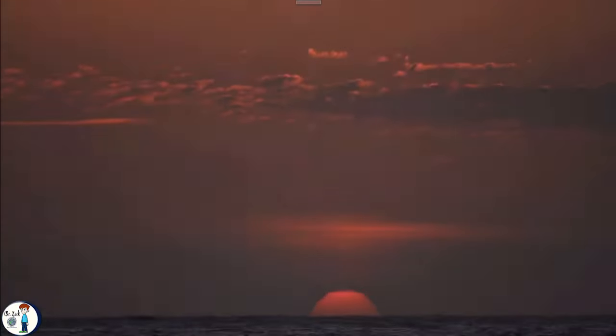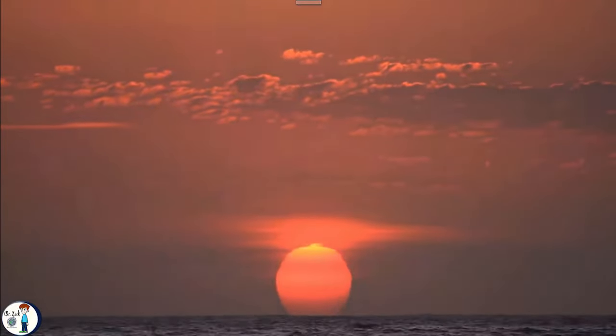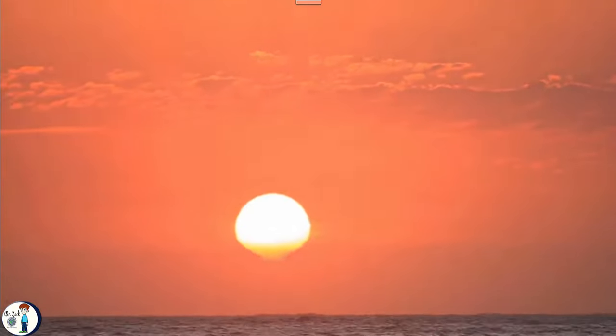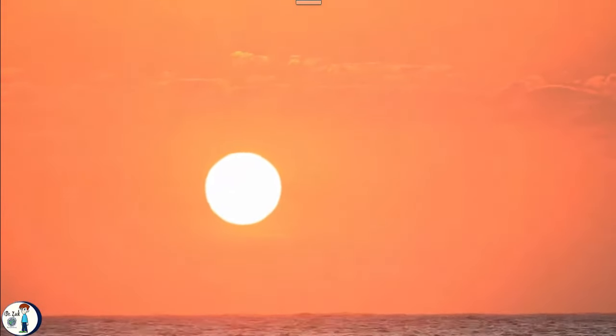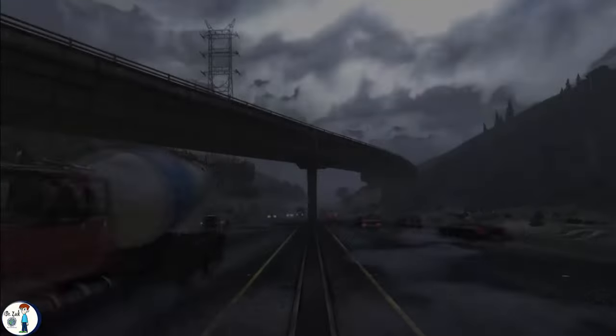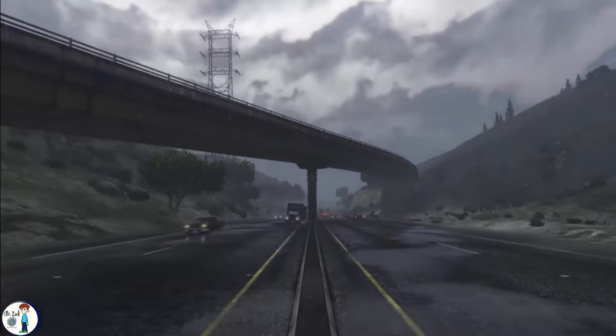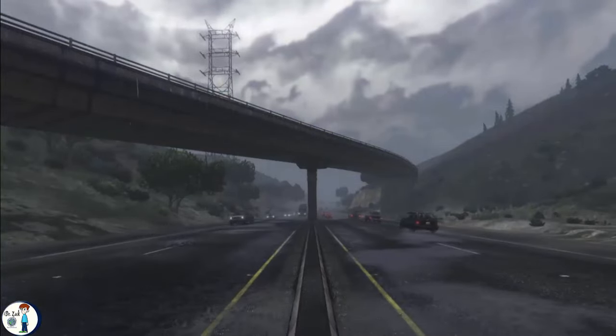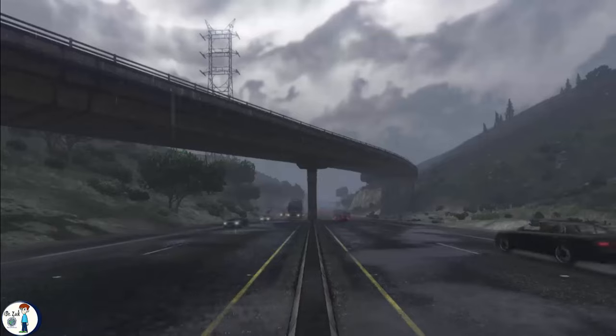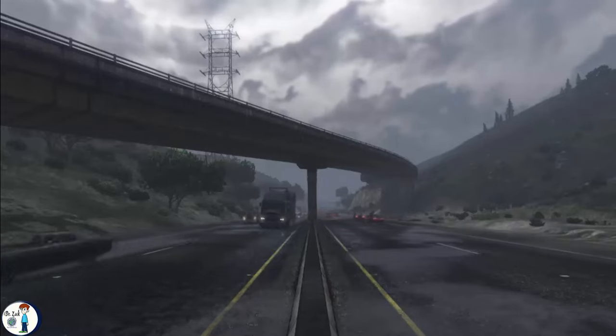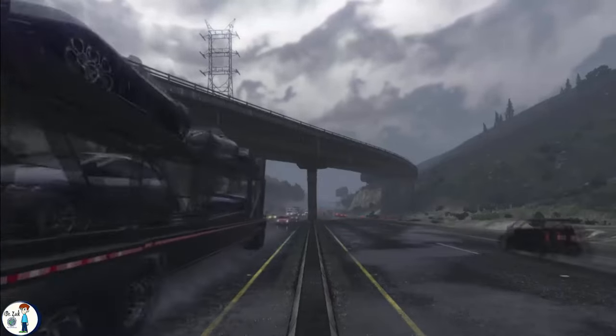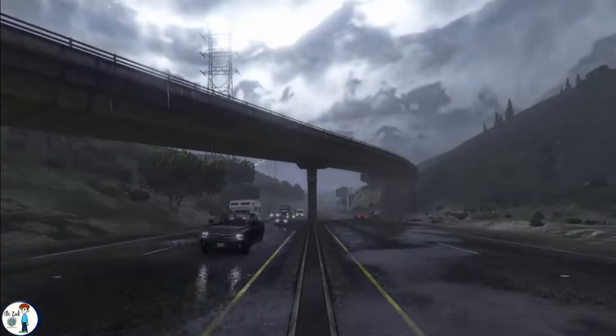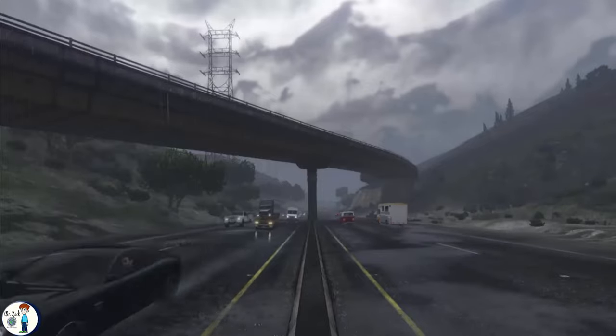And by the way, if perspective is the reason why the sun sets on the flat earth, then the more the sun moves away from us, the slower it should appear to us, right? Imagine yourself in the middle of a highway. The cars that pass by you will be moving in their real speed. But as they move away from you, they look like they are slowing down. But that doesn't happen with the sun, right? In fact, the sun appears to travel faster the more it moves away from you. So perspective is definitely not the only reason why the sun goes down.